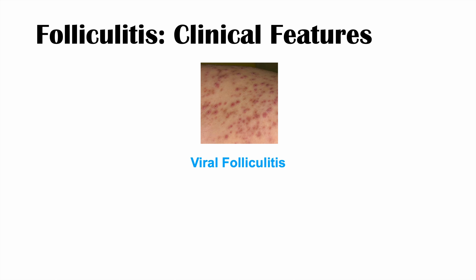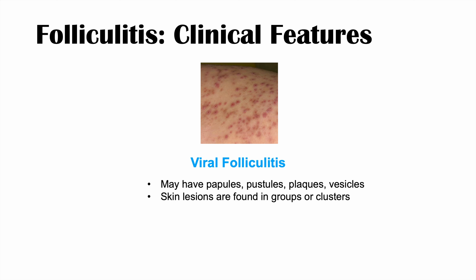Viral folliculitis has a variety of different appearances. It may have papules, pustules, plaques, or vesicles. Papules are raised skin lesions less than one centimeter in diameter; pustules are raised erythematous pus-filled lesions with a white tip; plaques are raised skin lesions greater than one centimeter; and vesicles are fluid-filled raised lesions. Skin lesions are often found in groups or clusters, which is associated with herpes virus infections.